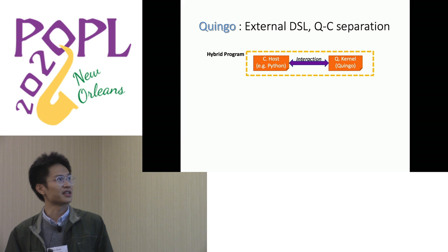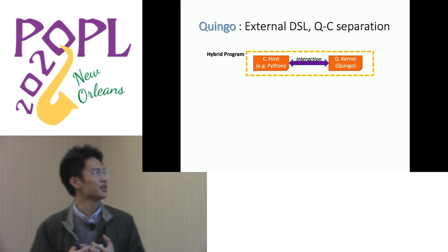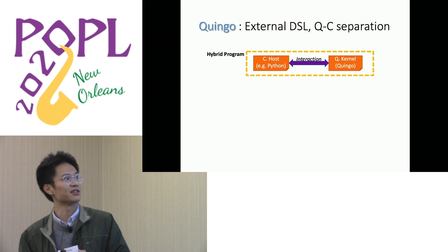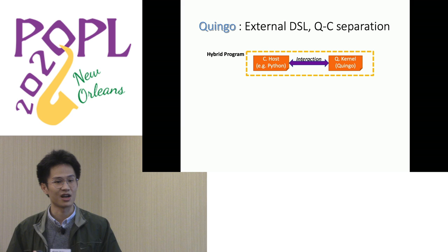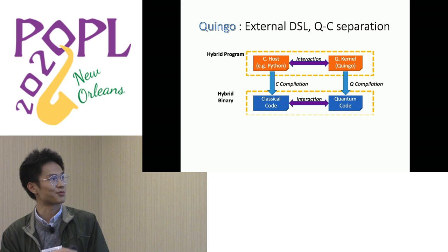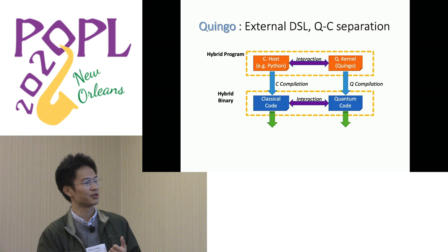Following this paradigm, Quingo is designed as an external domain-specific language emphasizing quantum-classical separation. A whole application consists of two parts: the host, which is the classical part, and the kernel, which is the quantum part implemented in Quingo. The compilation procedure is naturally separated into a quantum compilation process and a classical compilation procedure, resulting in a hybrid binary executed on a heterogeneous architecture.